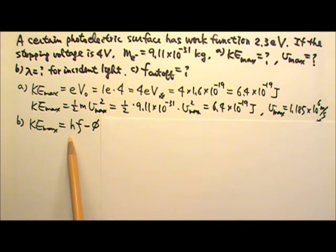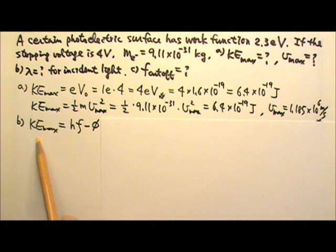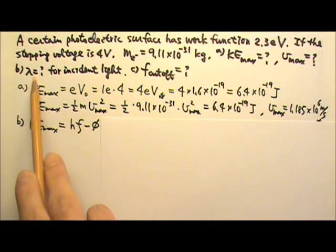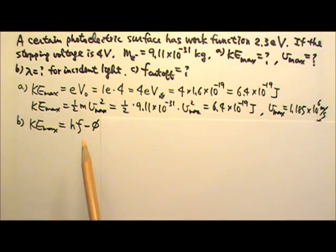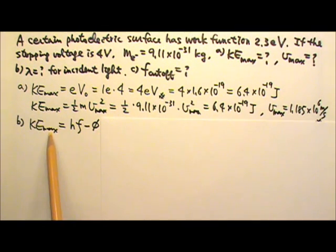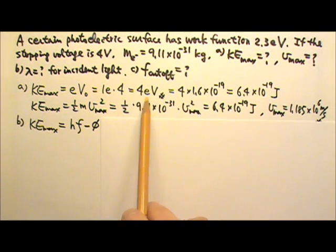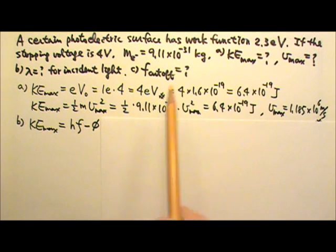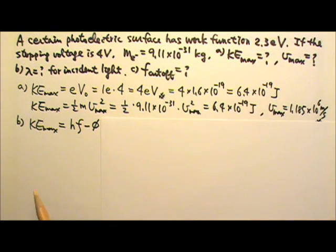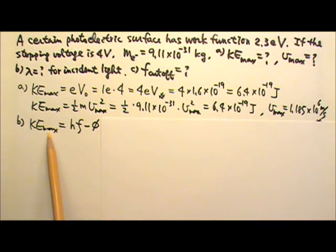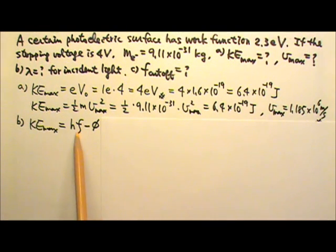We know everything except frequency. We can find frequency using this equation, then find wavelength. Since we know maximum kinetic energy and work function in electron volts, keep electron volts. When plugging in h, use the one with electron volts times second unit.